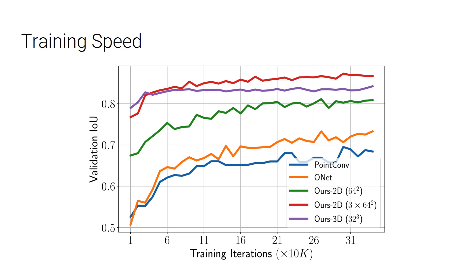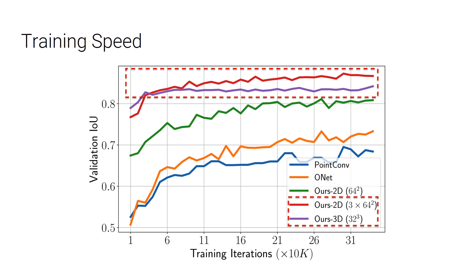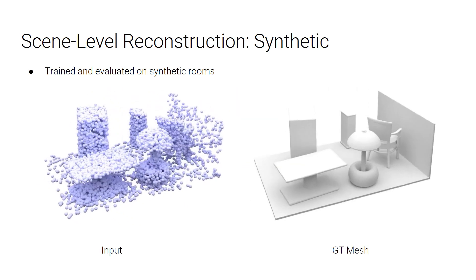We also observe that using our convolutional occupancy networks, now highlighted in the red box, leads to not only high validation IOU, but also much faster training.